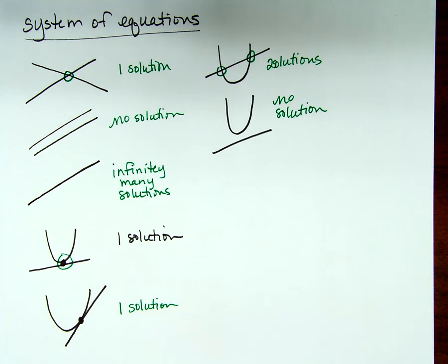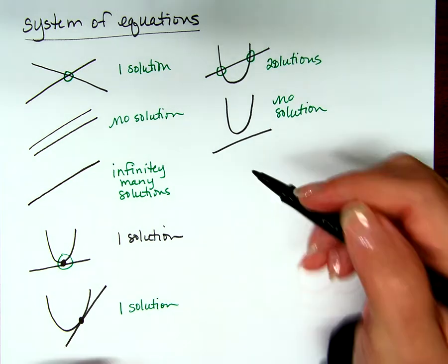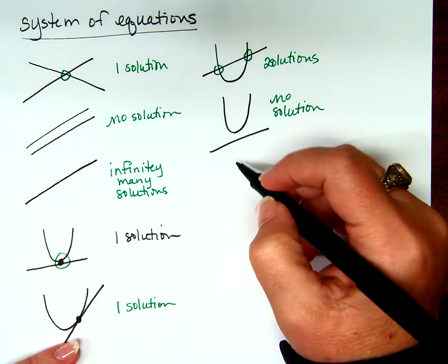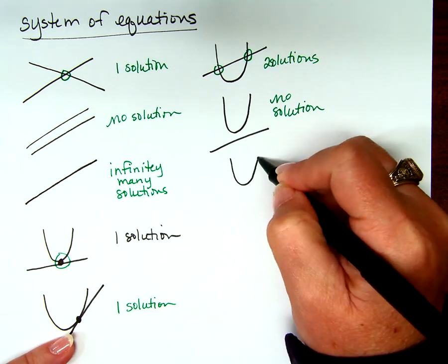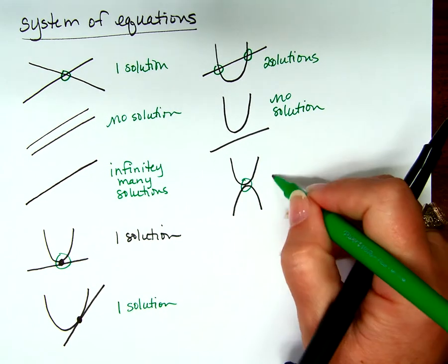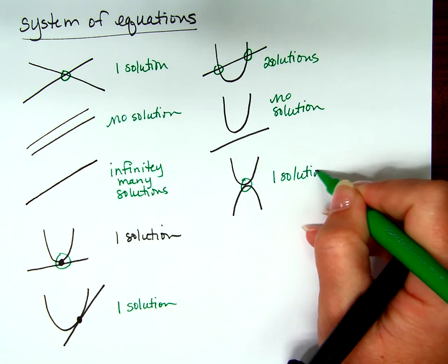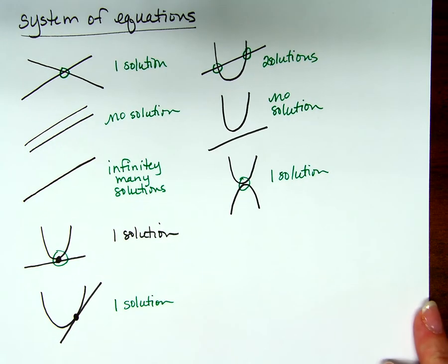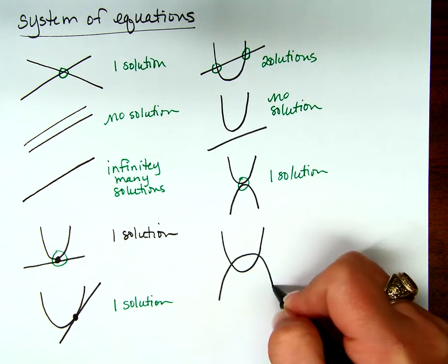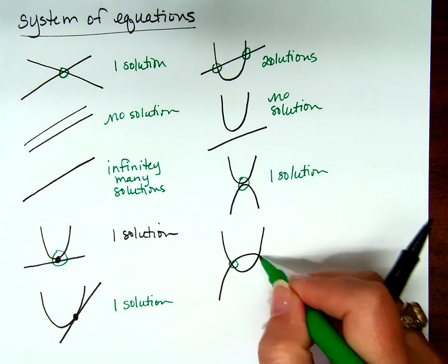Is that the only way we could have a system of non-linear equations? Does there have to be a line at all? What if there were two parabolas? So what would it look like — what's a possibility? If they were touching at the vertexes like that, there's one solution, right? What else? If it wasn't at the vertex and they could cross like that, how many solutions is that?